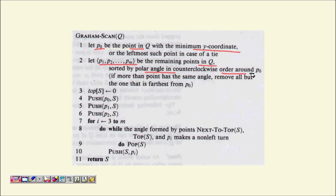Then we maintain a stack. We push the first three points p0, p1, and p2. Then from i equal to 3 to m, while the angle formed by the next-to-top of the stack, the top of the stack, and the new point pi makes a non-left turn, we pop the stack. We keep popping and only push points, and whatever points are left in the stack form the convex hull set.